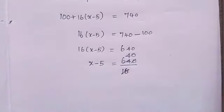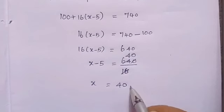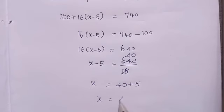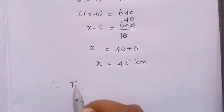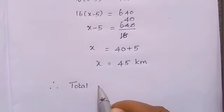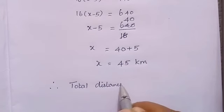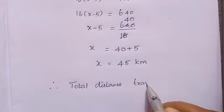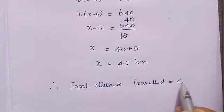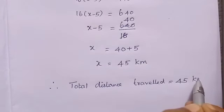Add that 0. x equals 40. Shift the 5 to the right side — it changes into plus 5. So, x value equal to 45. Therefore, total distance they travelled is 45 kilometres. Total distance travelled equal to 45 kilometres.